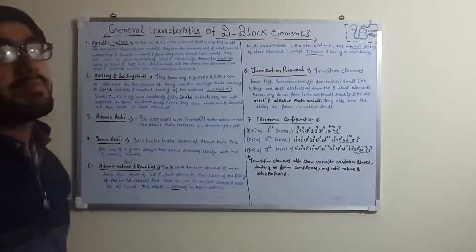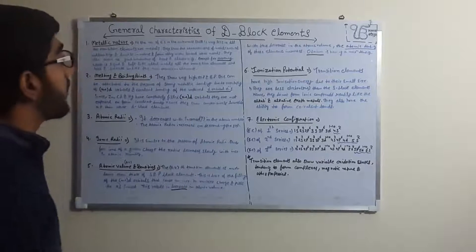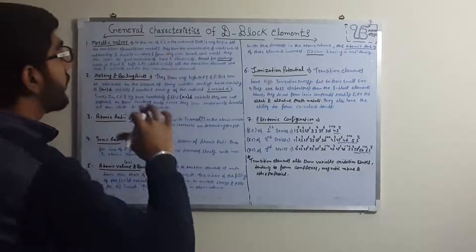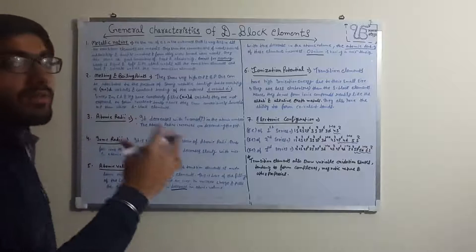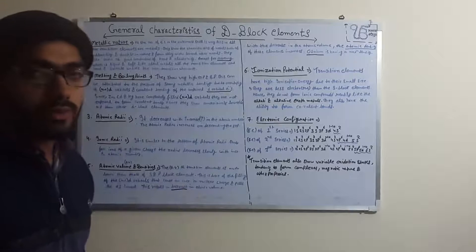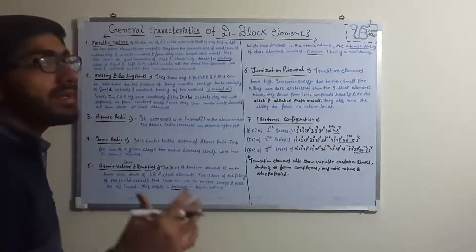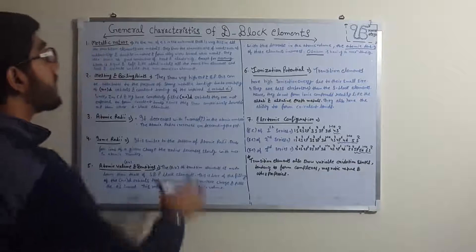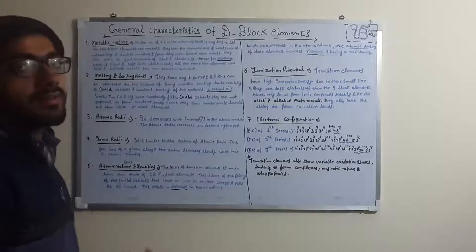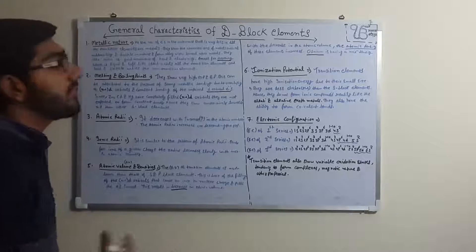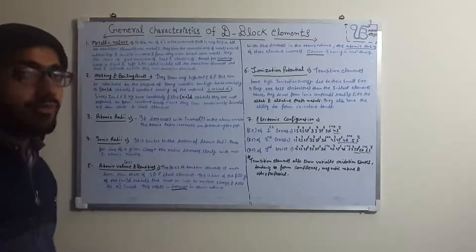The first characteristic is metallic nature. As the number of electrons in the outermost shell is very less, all the transition elements are metals. D block elements are called transition elements, and all of them are metals. They show characteristics of metals such as malleability and ductility, and form alloys with several other metals.